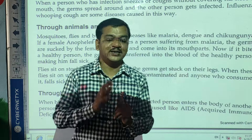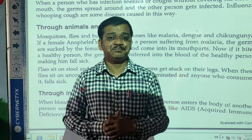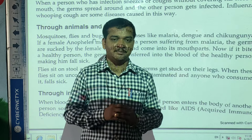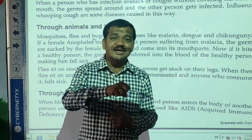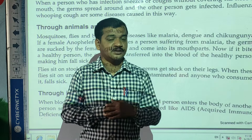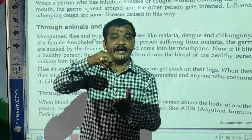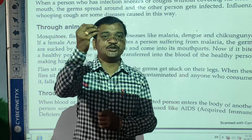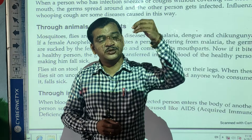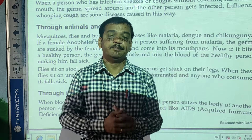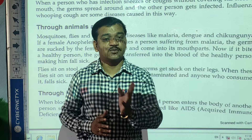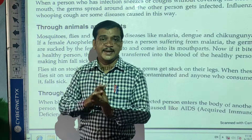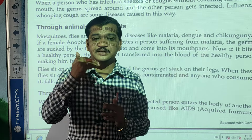The germs are transferred as follows: a person infected with malaria is bitten by a female Anopheles mosquito, which sucks the blood along with the germs into its mouth. If the same female Anopheles mosquito then bites a healthy person, those germs are transferred to the healthy person's body through the blood, and that healthy person also suffers from malaria. This is how the female Anopheles mosquito carries germs from an infected person to a healthy person.